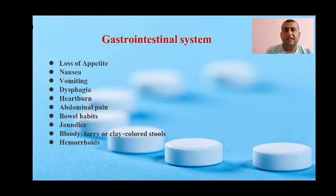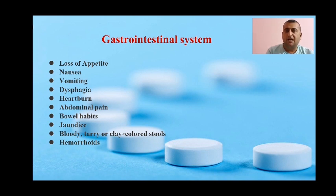When reviewing the gastrointestinal system, ask about loss of appetite, nausea, vomiting, dysphagia, heartburn, abdominal pain, bowel habits, jaundice, bloody, tarry or clay-colored stools, and hemorrhoids.